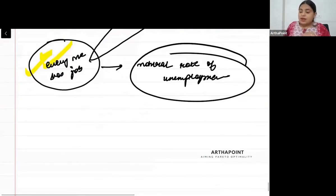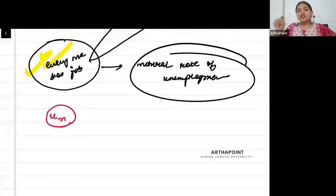Now the natural rate of unemployment is represented by U with a subscript UN. This is what we call the natural rate of unemployment. So the natural rate of unemployment is that unemployment where only two types exist: frictional and structural. The rest of everyone is employed in the economy.